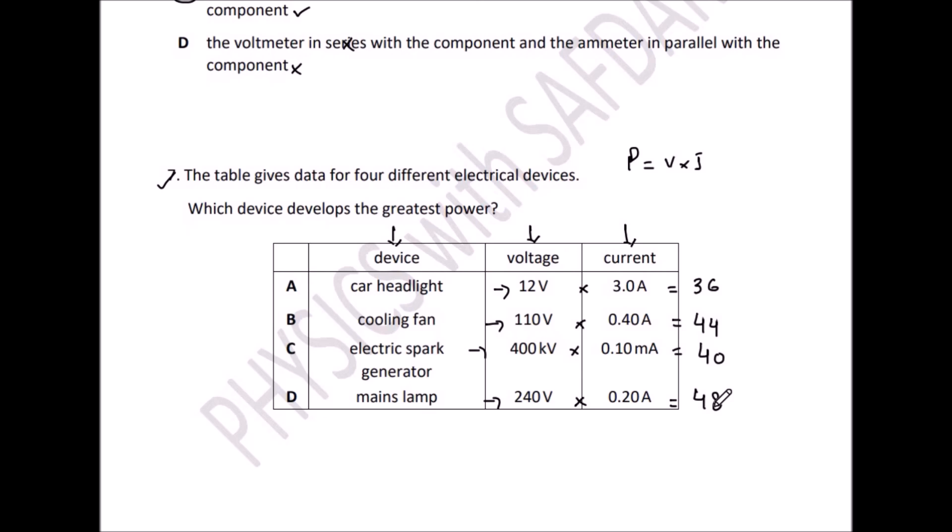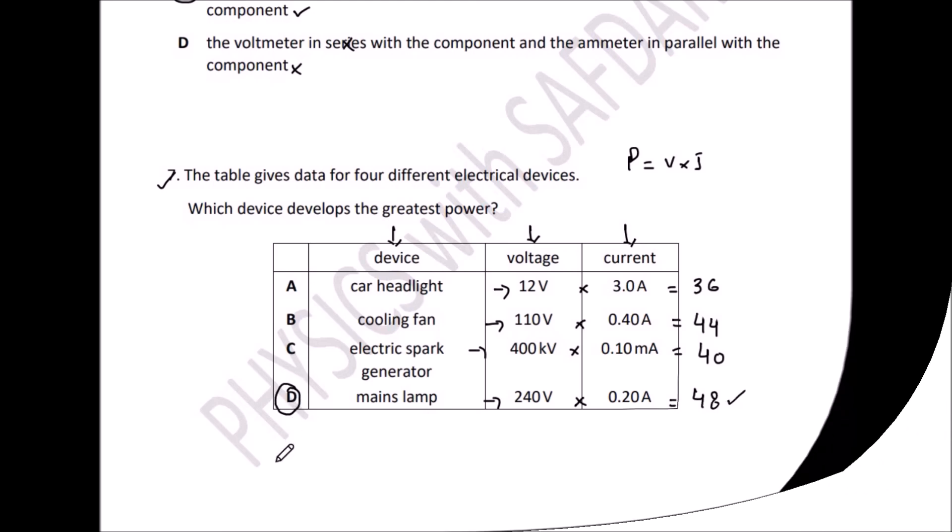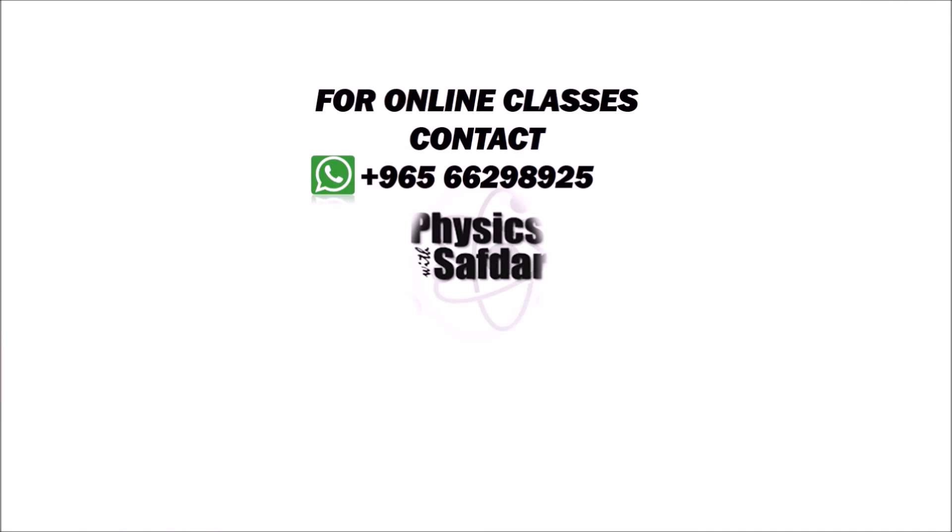We need to calculate which device developed the greatest power. You can see 36, 44, 40 and 48. So option D is the right answer here. Thank you very much for watching this video. I suggest you follow the playlist of the channel. In that you can find all the lessons you need in your IGCSE Physics. Keep watching Physics with Safdar for better results in exams. See you in the next lesson.